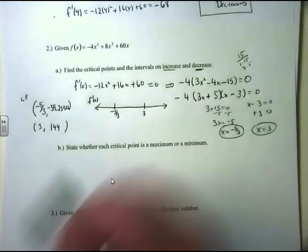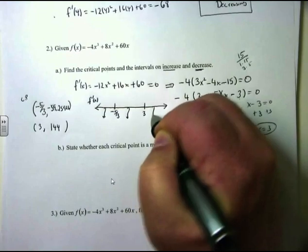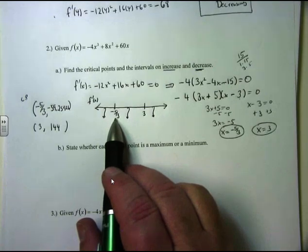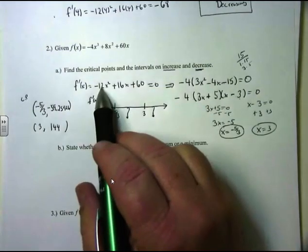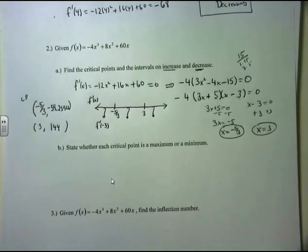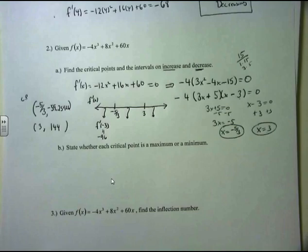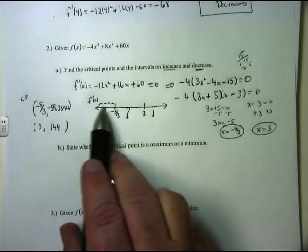These are the points where the derivative equals 0. Now we pick a number in each interval — called test values. I want a number less than -5/3, which is about -1 and 2/3, so I'll try -3. Plugging into the first derivative: -12 times (-3)² plus 16 times (-3) plus 60. I get -96. The sign is negative, so everybody in that interval is decreasing.